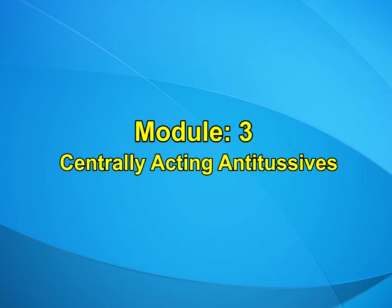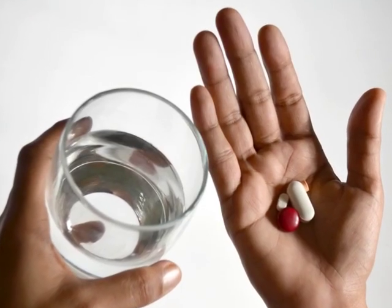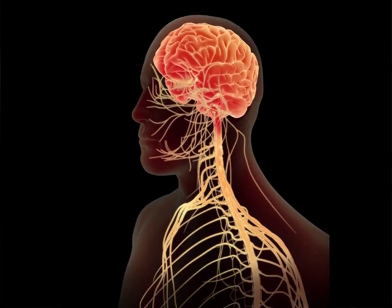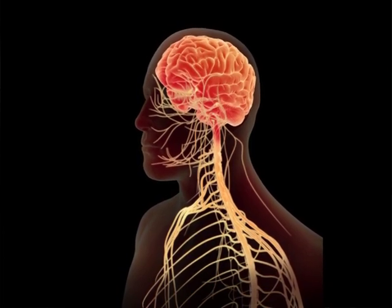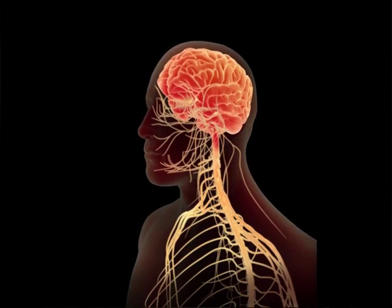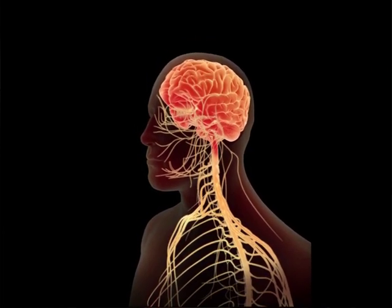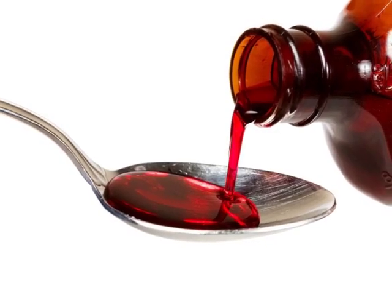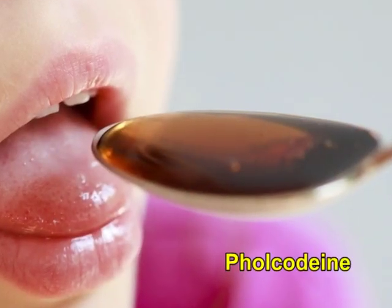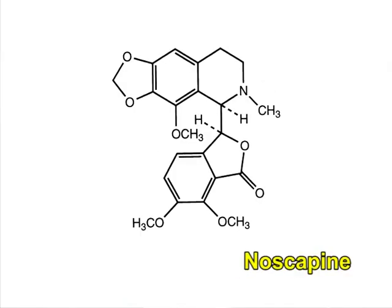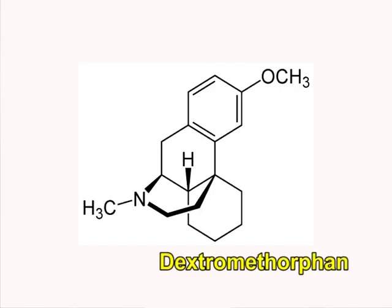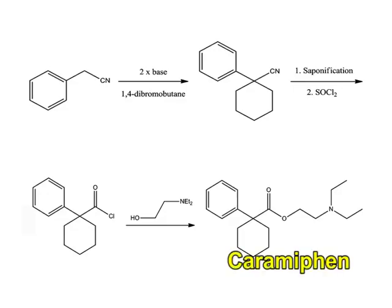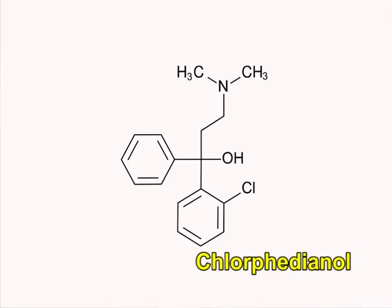Module 3: Centrally Acting Antitussives. These drugs reduce cough as a result of their central action. They depress the area of the CNS which controls the cough reflex and are mainly useful in the symptomatic relief of dry, irritant type of cough. They may be narcotics or non-narcotics. Classification: opium alkaloids — morphine, codeine; derivatives of opium alkaloids — pholcodine, ethylmorphine, noscapine; synthetic morphine substitutes — dextromethorphan, levopropoxyphene; non-opioid synthetics — cloperastine, dimethoxanate, chlorphedianol.